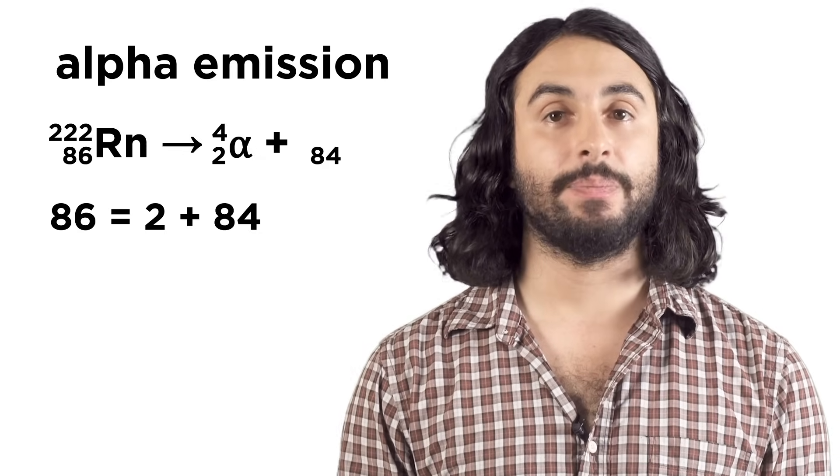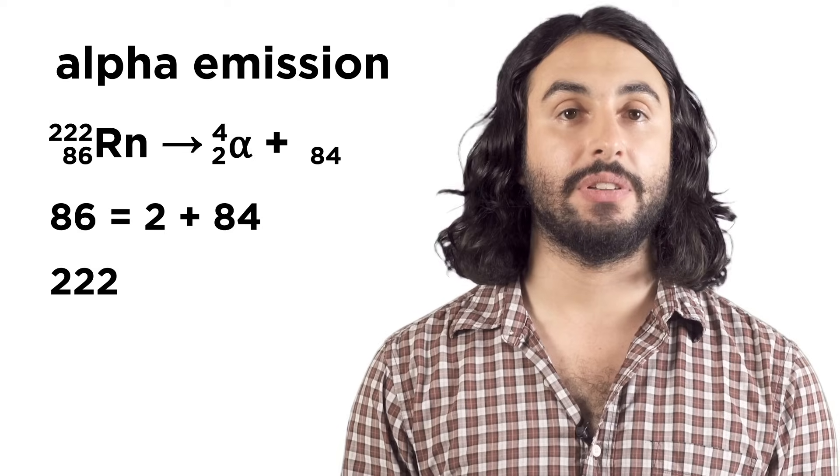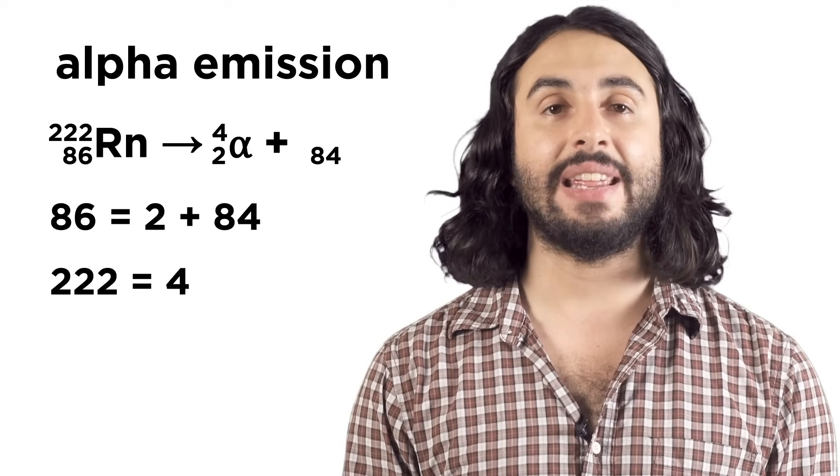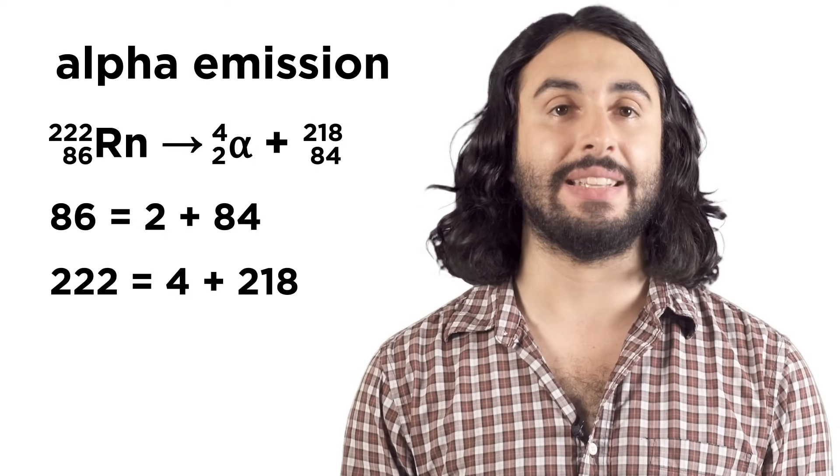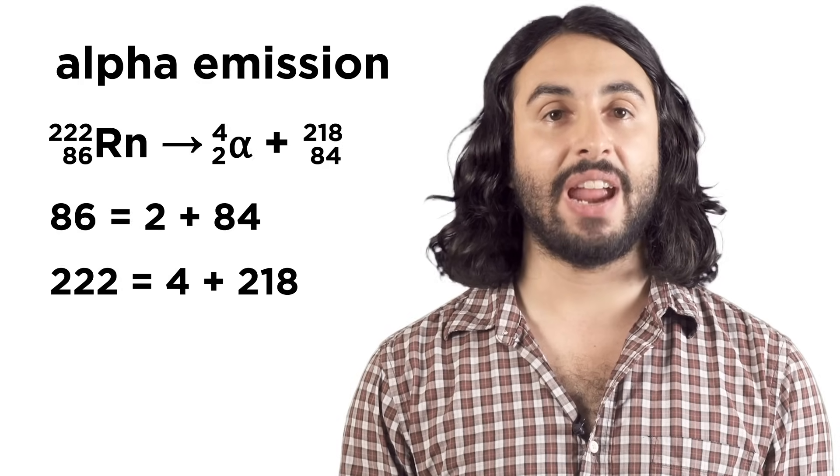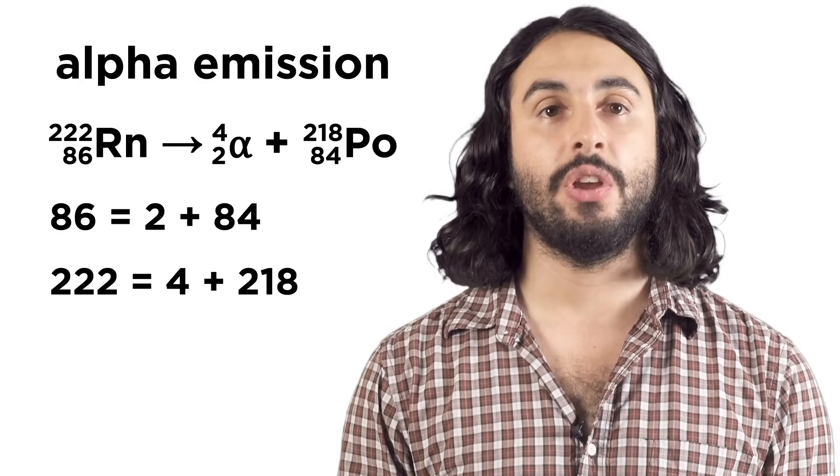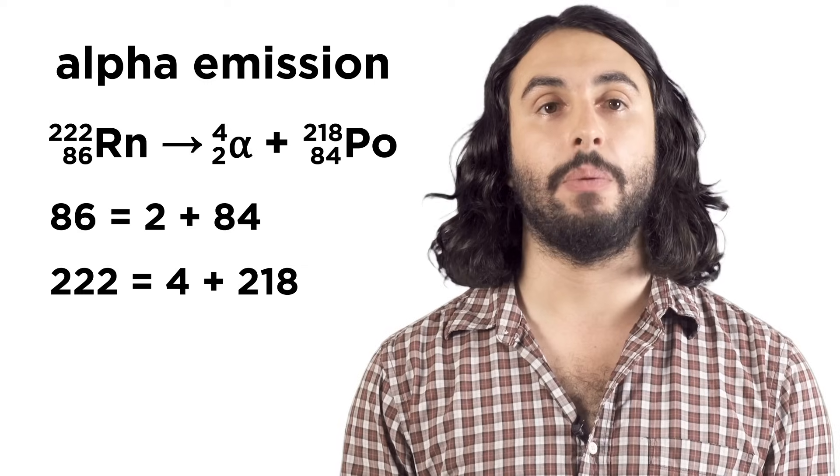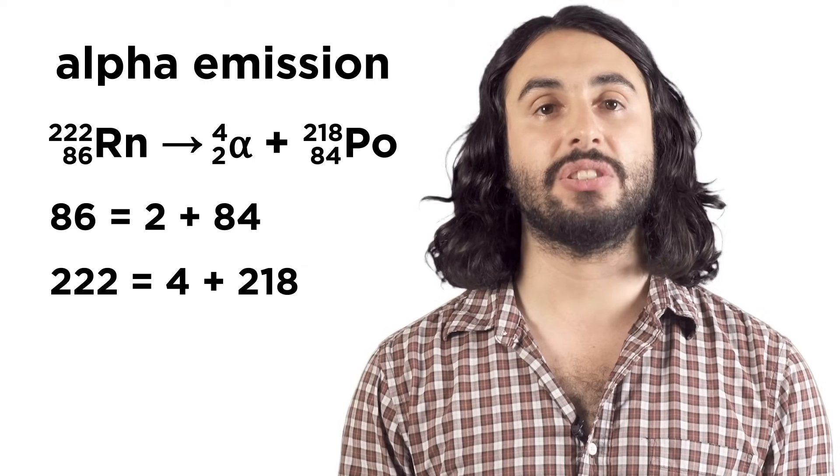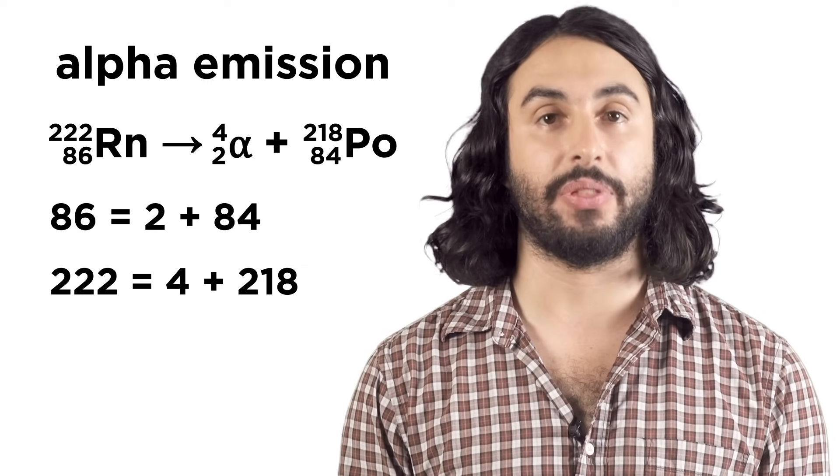Again with mass, 222 on the left, four on the right, we need the other particle to be 218. Any atom with 84 protons is polonium, so the resulting nuclide symbol must be this. Again, the numbers on each side of the arrow add up to the same thing.